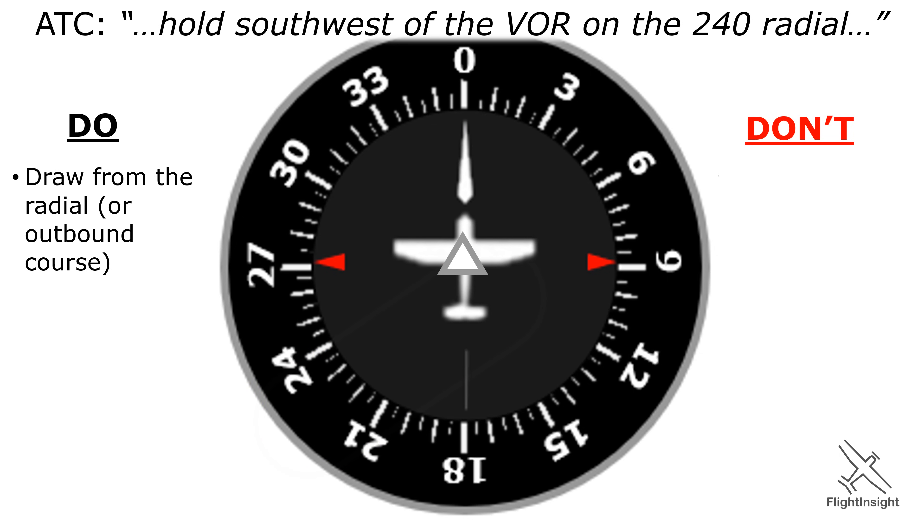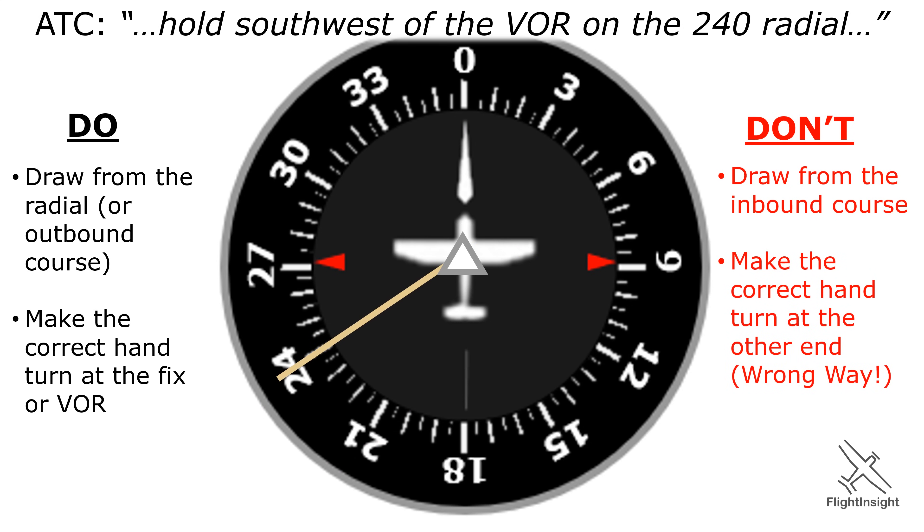What you don't want to make the easy mistake of doing is drawing from the inbound course, which would be 060 degrees. As you can see, this is a totally different hold. You do want to make sure you use the correct turns, either right or left, and that you make them at the fix. You don't want to draw these turns from the other end of the hold because what you've actually done is flipped the hold on the wrong side.